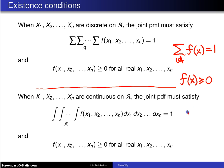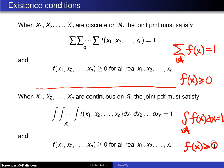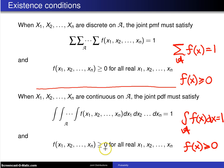In the continuous case, recall in one dimension that probability density functions have to integrate to 1 over their support, and they have to be greater than or equal to 0 for all real values x. So in the continuous case, when x1 up to xn are continuous on the support A, the joint probability density function must satisfy the n-fold integral over the support equaling 1, and f of x1 up to xn must be greater than or equal to 0 for all real values x1 up to xn.